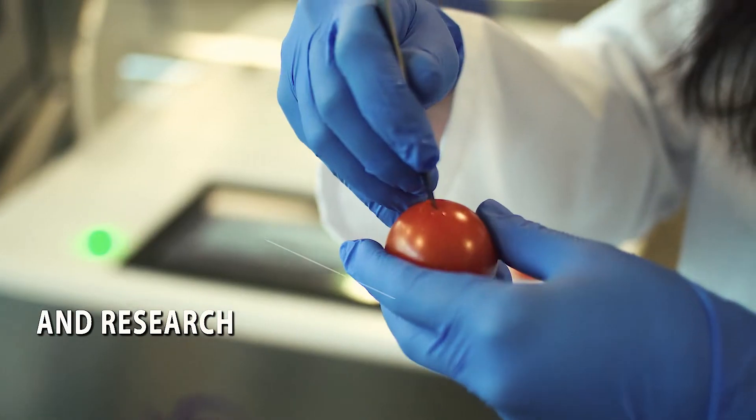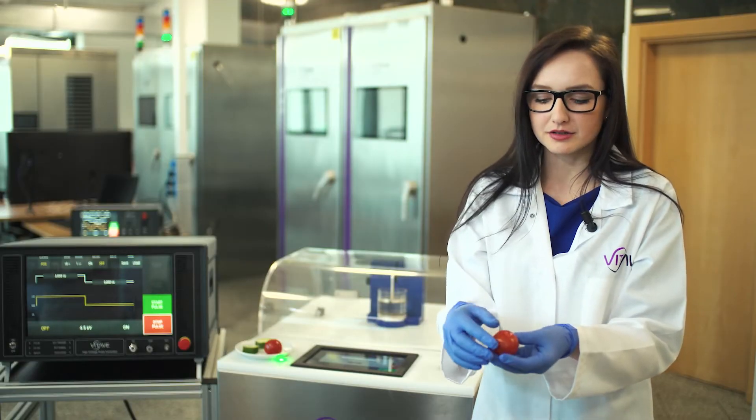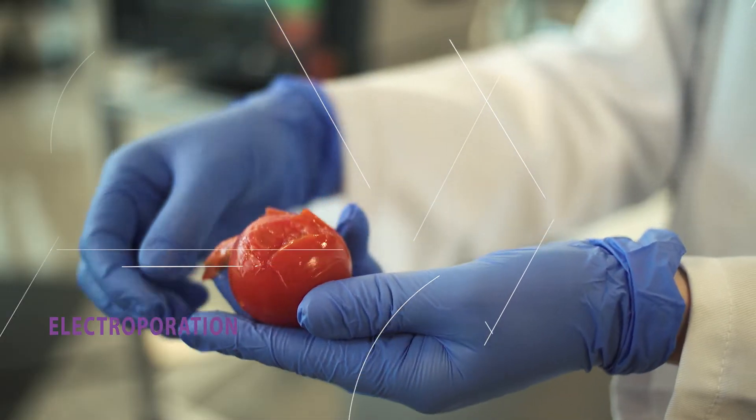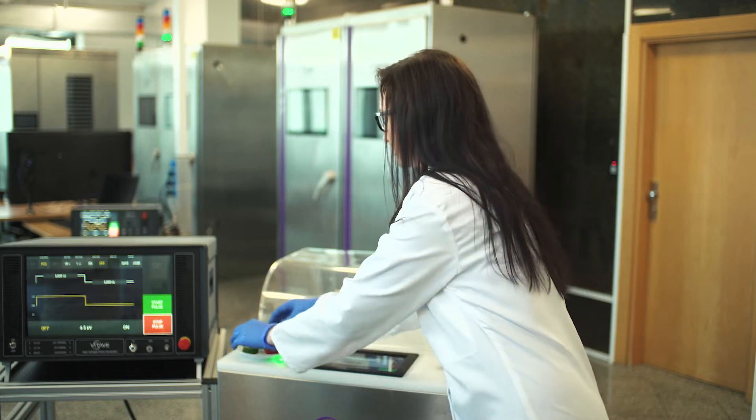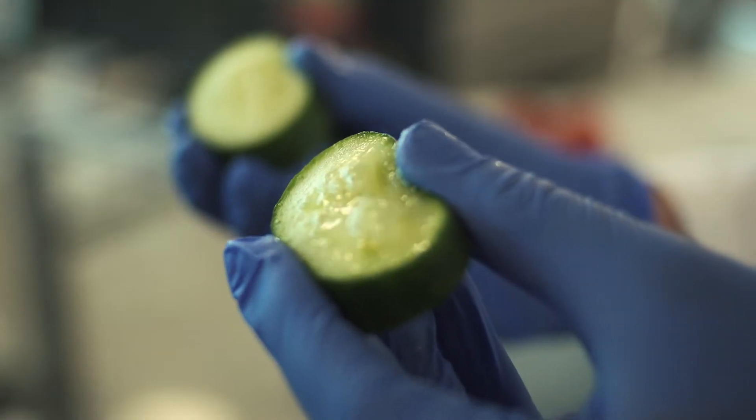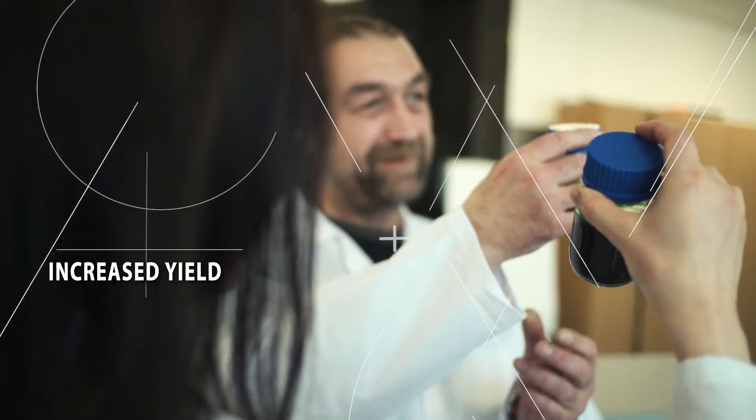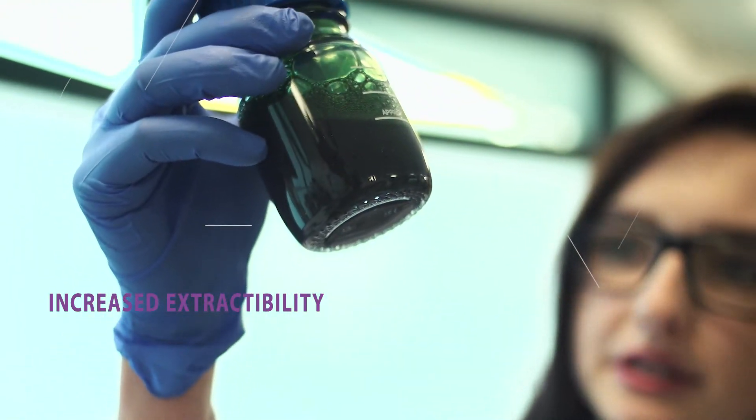High voltage pulsed electric field treatment induces electroporation. The cell membranes become porous. In other words, they open up. Electroporative tissue is very soft. Opening cells results, for example, in increased extractability.